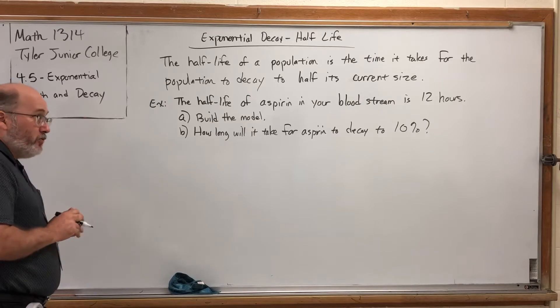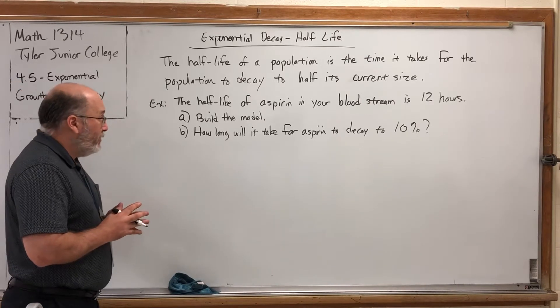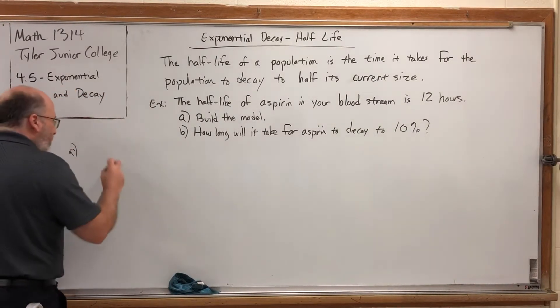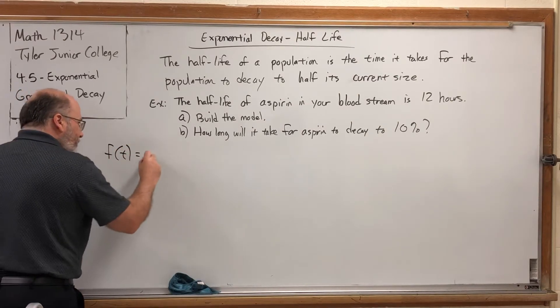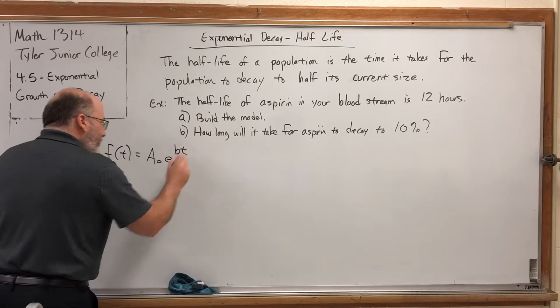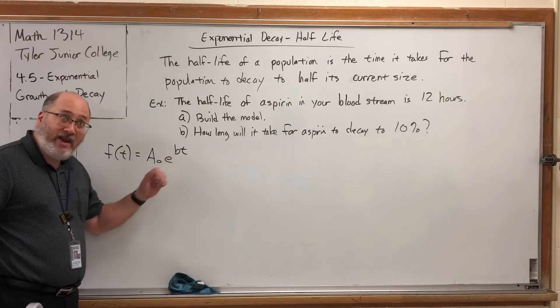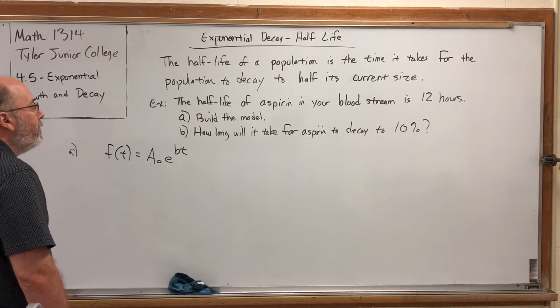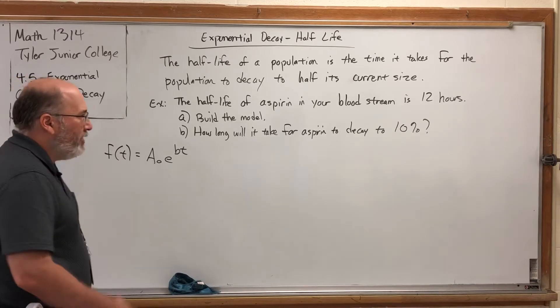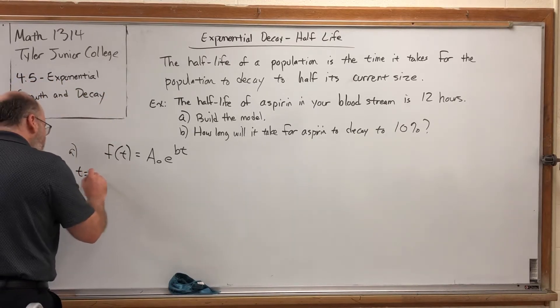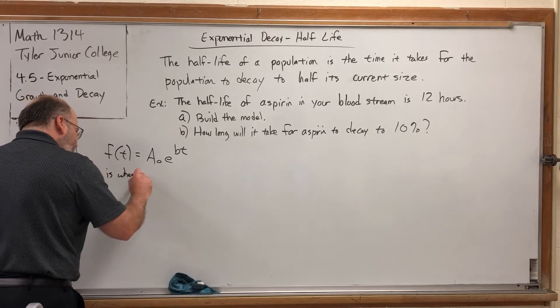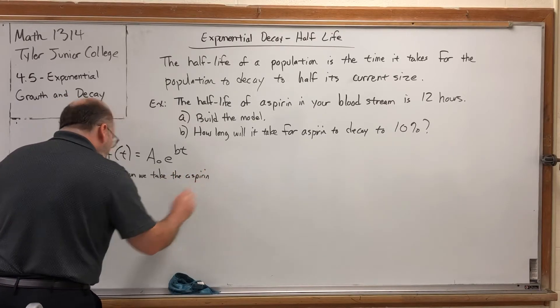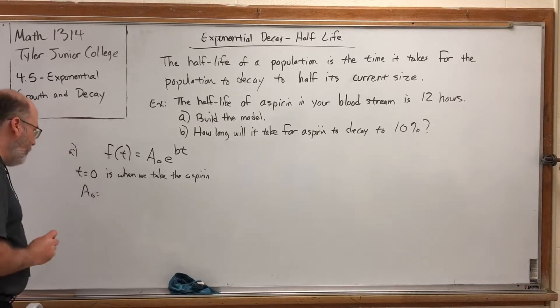All right, so let's build a model. Now you may be thinking, there's a problem here. We don't have a beginning time. We don't have a beginning population like we did with the planet. But that's okay. We know that the model is going to look like F(t) = A₀e^(Bt). Because it's decay, we should expect the B to come out negative. We'll see if it does. So how are we going to start this? Well, we don't have an initial time, but we can say that t equals zero is when we take the aspirin.